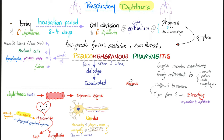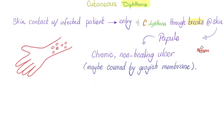As for neuropathy, it begins at the pharynx and palate, then involves the oculomotor nerve causing ciliary muscle paralysis, and then peripheral neuritis develops. As for the fate of the pseudomembrane — give it about a week and you will dislodge and expectorate it on your own.